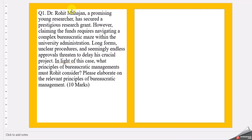The first question is: Dr. Rohit Mahajan, a promising young researcher, has secured a prestigious research grant. However, claiming the funds requires navigating a complex bureaucratic maze within the university administration. Long forms, unclear procedures, and seemingly endless approvals threaten to delay his crucial project. In light of this case, what principles of bureaucratic management must Rohit consider? Please elaborate on the relevant principles of bureaucratic management.